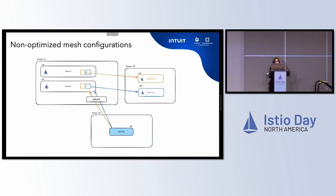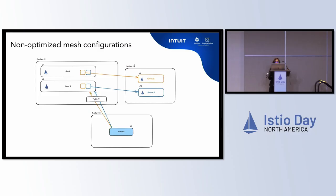So how that looked at the cluster level: consider a scenario where shard 1 is actually calling service B and shard 2 is calling service A. In this case, Admiral — the global control plane component we use at Intuit — was actually fanning out the Istio configurations for both services to both shards, represented by the small blue and yellow boxes. This obviously was not useful because shard 1 was never going to call service A, and similarly for shard 2.